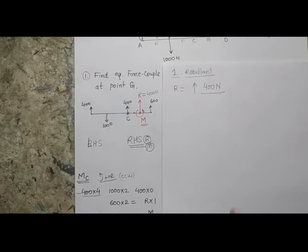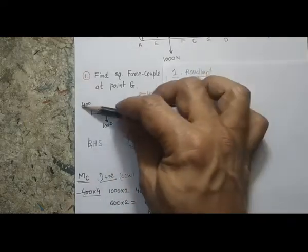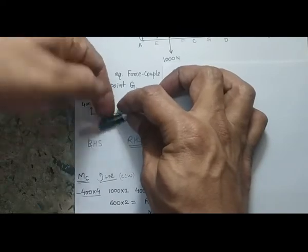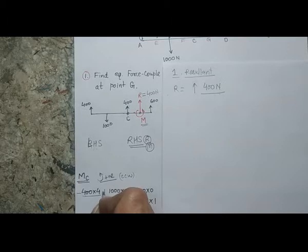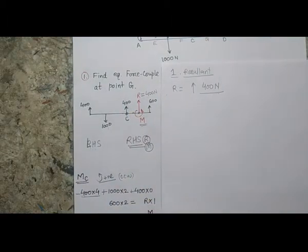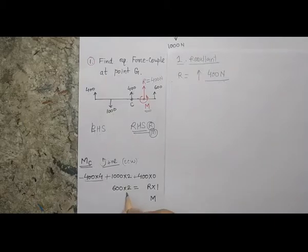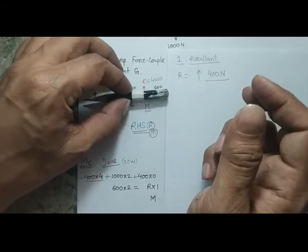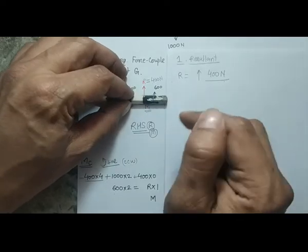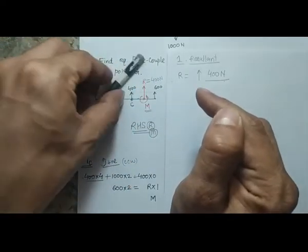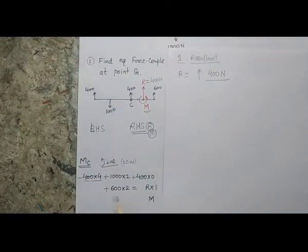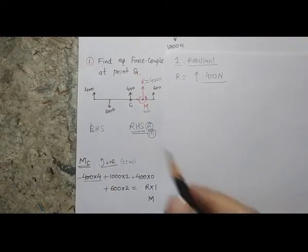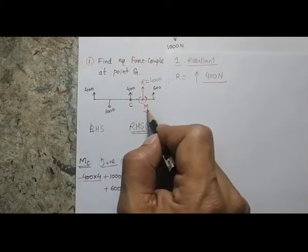The 1000 Newton downward force at B gives counterclockwise rotation at C, so it's positive. The 400 N force at C contributes zero. The 600 Newton upward force gives counterclockwise rotation, so it's positive. On the right-hand side, M is assumed counterclockwise (positive), and R also produces counterclockwise rotation about C, so it's positive.